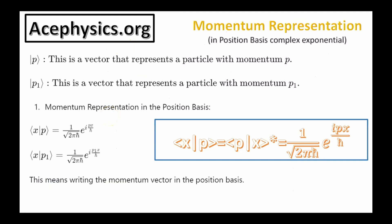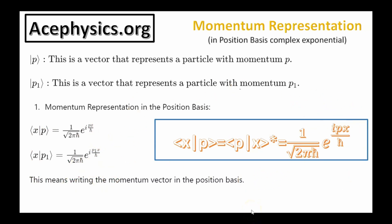Now I want to move on to the momentum representation in the position basis. Ket p is a vector that represents a particle that has momentum p — it has constant momentum. Ket p1 is a vector that represents a particle with momentum p1. This function corresponds to a particle with constant momentum, and this other function corresponds to a particle with constant momentum p1. This is the complex exponential — the important function that represents constant momentum. The p in the exponent is constant; one p-value corresponds to multiple different x-values.